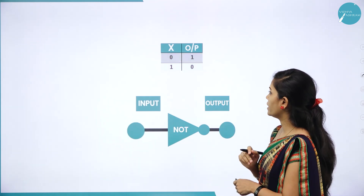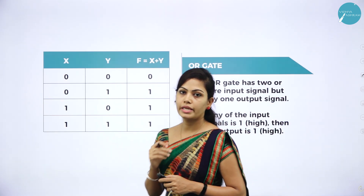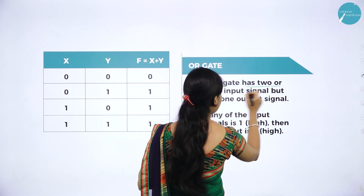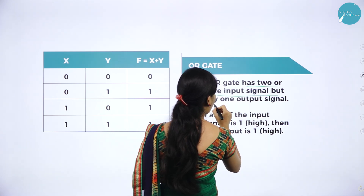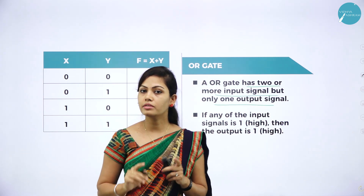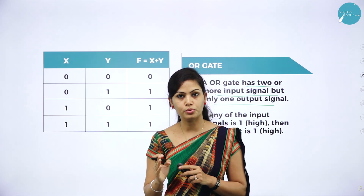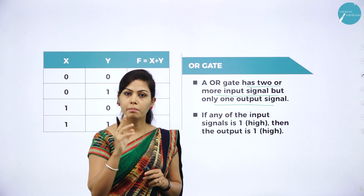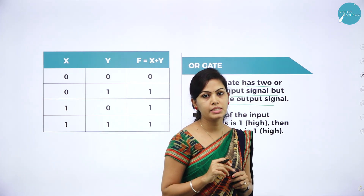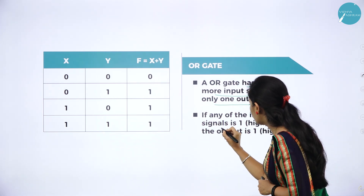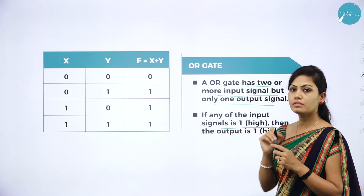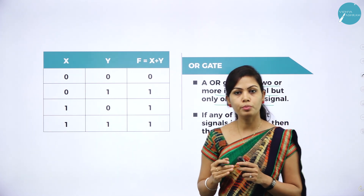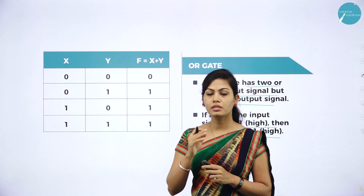Next is the OR gate. OR gate has two or more input signals but only one output signal. In NOT gate we had only one input and one output, but in OR gate we have two or more input signals but only one output signal. If any of the input signals is high (that means 1), the output is also 1. Otherwise, the output is 0.